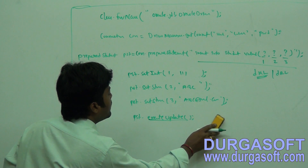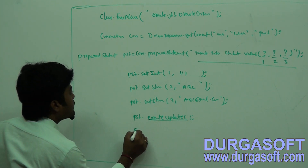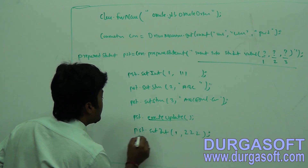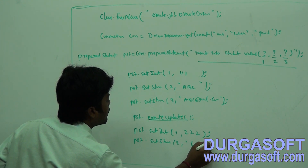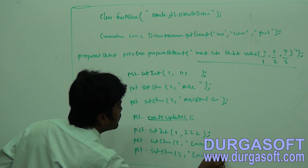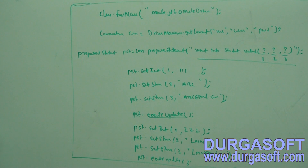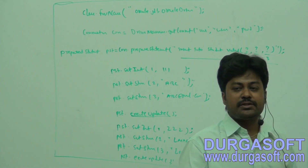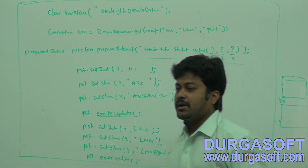Once after executing by calling executeUpdate, you can insert data into the database. If you want to insert another record, pass values again: preparedStatement.setInt(1, ...), preparedStatement.setString(2, ...), preparedStatement.setString(3, 'lmn@gmail.com'), and call executeUpdate again. You can insert as many records as you wish — keep it in a for loop and insert thousands of records using a single PreparedStatement.